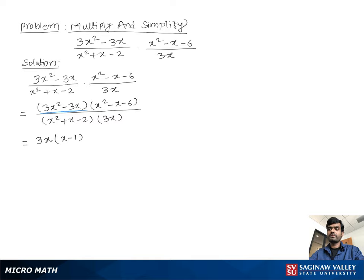Then we factor x² - x - 6, which is (x + 2)(x - 3). In the denominator, we factor x² + x - 2, which is (x - 1)(x + 2), and we have 3x remaining.